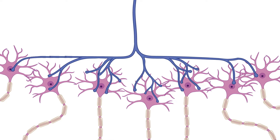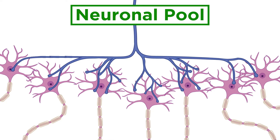When we pull back from a single neuron to see a small collection of neurons, we can call this a neuronal pool. This will serve to integrate information coming in so that it can be determined how to forward that information to where it needs to go.